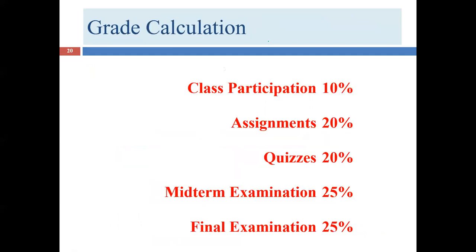Here's how the grade is calculated. Class participation — discussion boards — is 10% of your grade. There's a discussion board every single week, so each one is less than one percent of your grade. Missing one discussion board will barely impact your grade at all. The takeaway is to invest your time in things that matter most.